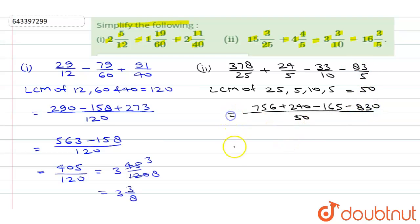So for solving this, we will add 756 and 240, so we'll get here 996. And when we add 165 and 830 we'll get here 5, 6 plus 3, 9, and 8 plus 1, 9, upon 50. When we subtract 996 and 995 we'll get 1/50. So I hope this answered your question. Thank you.